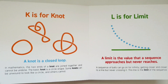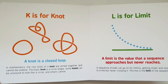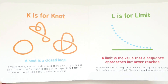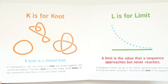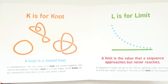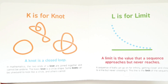K is for knot. A knot is a closed loop. In mathematics, the two ends of a knot are joined together and cannot be undone. The basic knot is a circle shape. Some knots can be unwound to look like a circle and others cannot.